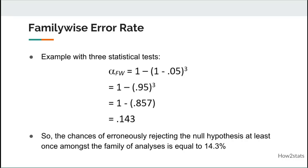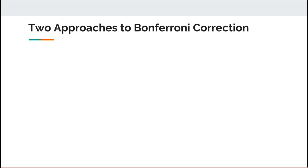That's where the Bonferroni correction comes in — to try to control the family-wise error rate from blowing out to something really big. The argument is to keep the family-wise error rate at 0.05, just as you have your per-analysis alpha at 0.05 for any one analysis. So how do you reduce the family-wise error rate from 14.3% down to 0.05? There are two approaches to doing the Bonferroni correction.